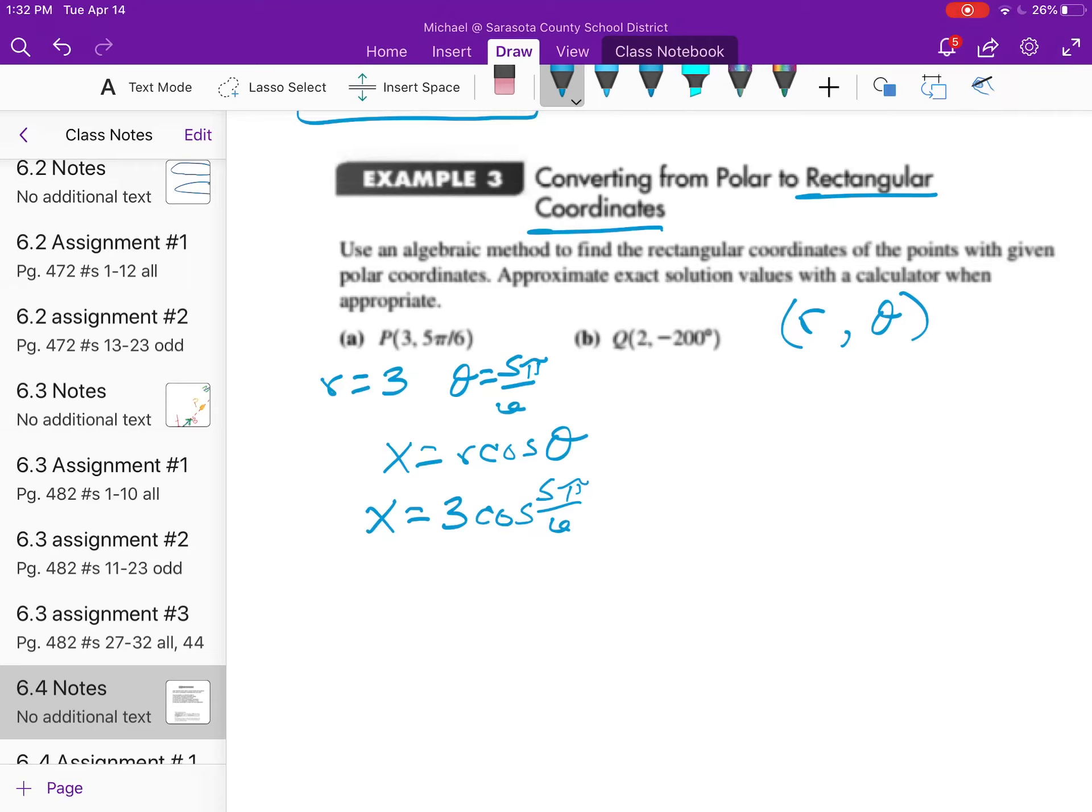To do that, we find what the value of cosine of 5π over 6 is. Cosine of 5π over 6 is in quadrant 2, so it's negative square root of 3 over 2. So x equals 3 times negative square root of 3 over 2, which gives us x equals negative 3√3 over 2.